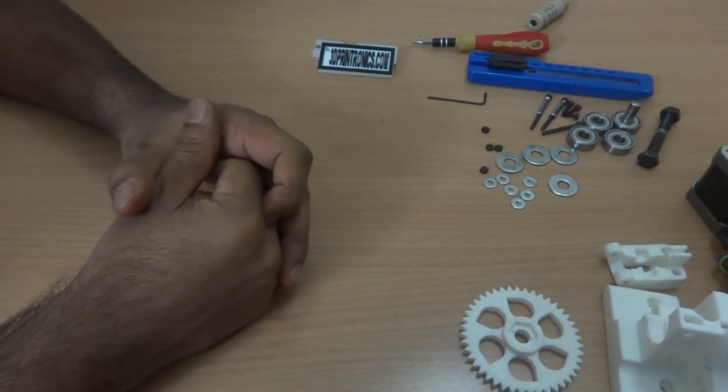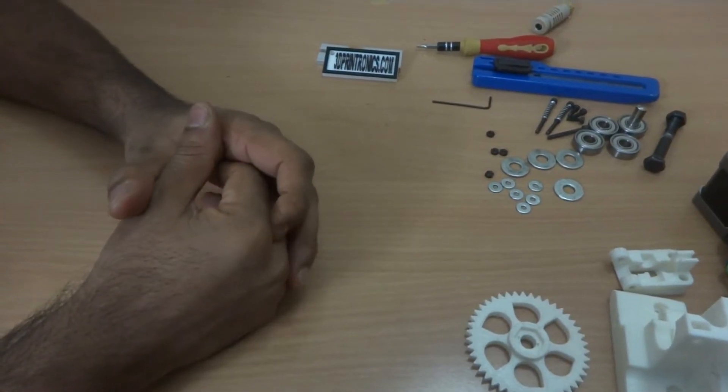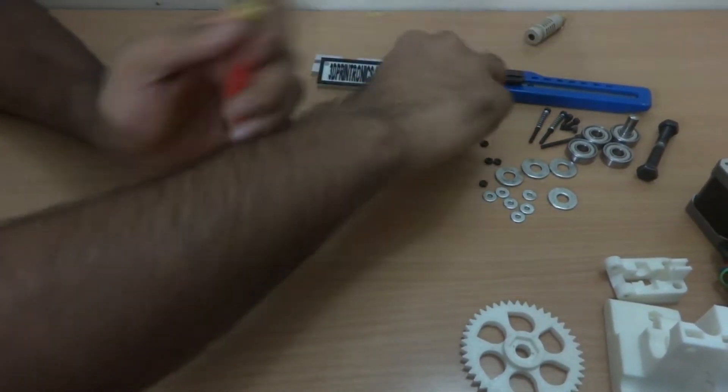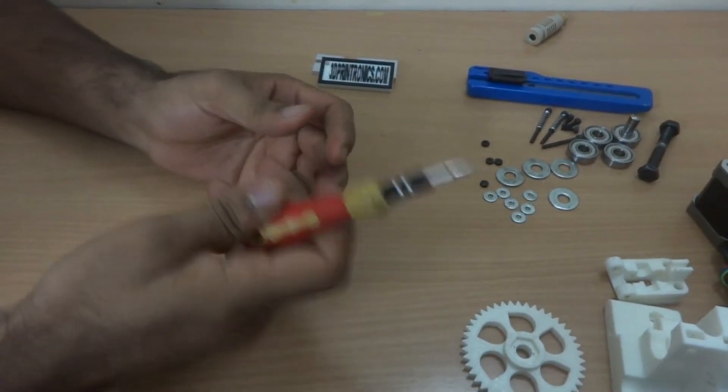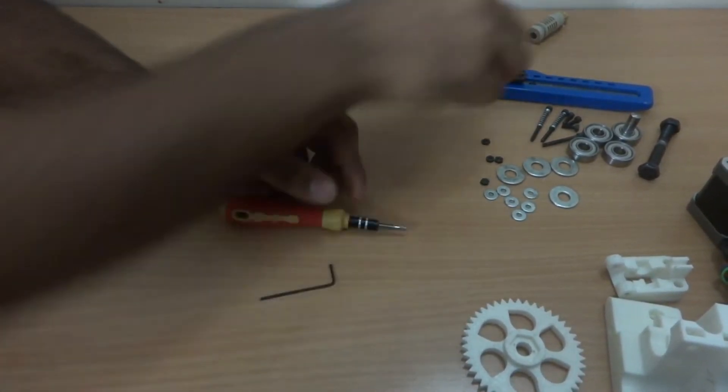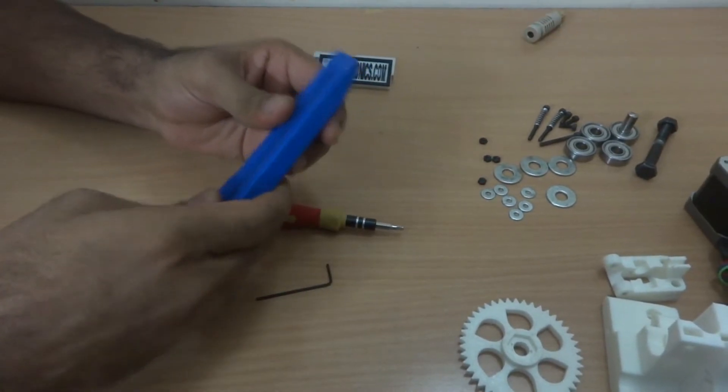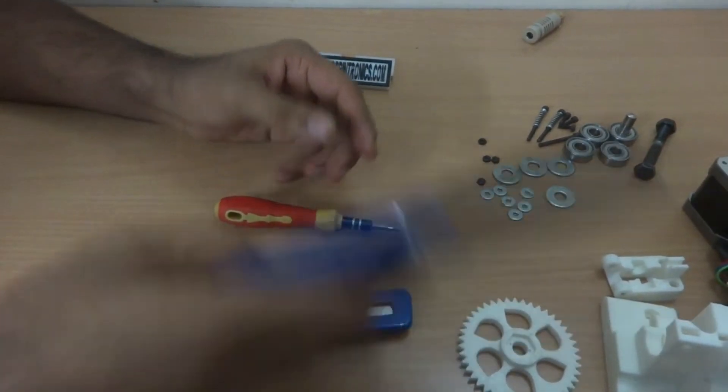First we will have a look at all the tools which will be required for this assembly. We need an M3 Allen key, M5 Allen key or right now I'm using a screwdriver, a knife, M8 wrench, and a pair of pliers.